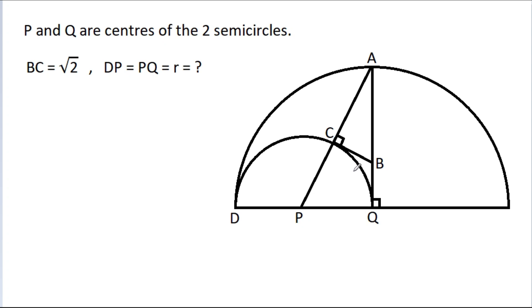In this video, we have been given that BC is square root of 2, DP is r, PQ is r, and we have to find r.